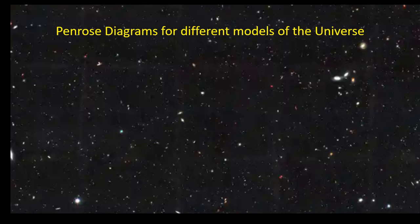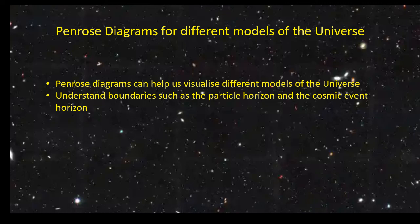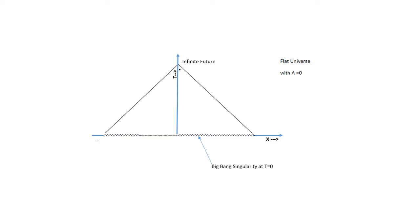Penrose diagrams are very useful in understanding the evolution of the universe and the changes to boundaries over time, such as the particle horizon, which is the furthest distance we can see at a given point of time. This is far too detailed a topic to be covered in this short video, and many different models of the universe can be shown in Penrose diagrams. But as an illustration, I've put the Penrose diagram for a flat universe, created in a Big Bang which has no dark energy and goes on expanding forever.